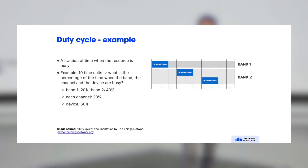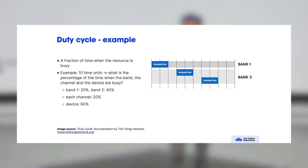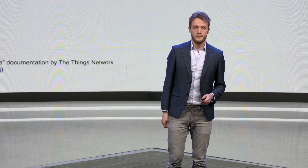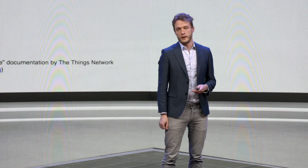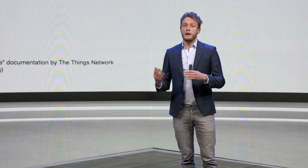For example, if band one has a duty cycle of 20 percent and band two has a duty cycle of 40 percent with two channels, there are three frequencies in total. If each frequency allows 20 percent duty cycle, the device can use frequency hopping across different frequencies for a combined time on air of 60 percent. End devices use frequency hopping not only because it's mandatory but also to optimize channel utilization. This duty cycle constraint is typically only applicable to European LoRaWAN deployments; in the US and many regions in Asia and Australia there is no duty cycle, though dwell time or other limitations may apply.